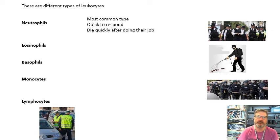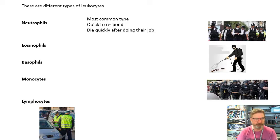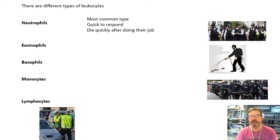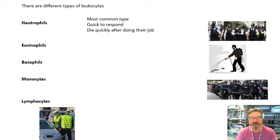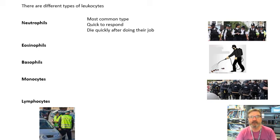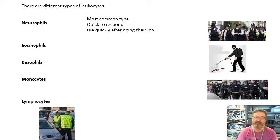About 50 to 60 percent of your white blood cells are neutrophils — they are the most common type. They are quick to respond but they die quickly after they've done their job. Think of them as the bobbies on the beat, the police on the streets. Something happens and they arrive very quickly in large numbers, but they die quickly. When they die, they may form pus — that yellow stuff.